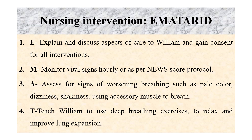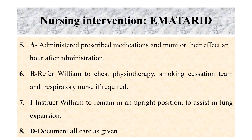For nursing interventions, you can use a numbered format, which makes it easy to write in the planning station. First: explain and discuss aspects of care to William and gain consent for all interventions. Second: monitor vital signs hourly or as per NEWS score protocol. Third: assess for signs of worsening breathing, such as pale color, dizziness, or use of accessory muscles to breathe. Fourth: use deep breathing exercises to relax and improve lung expansion. Fifth: administer prescribed medication and monitor its effect one hour after administration.